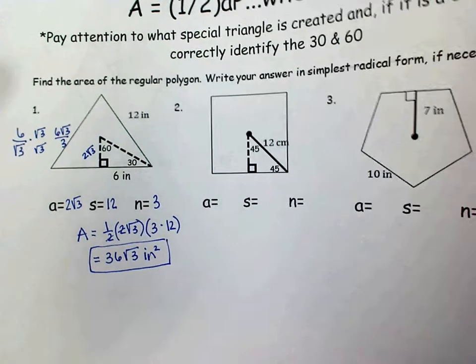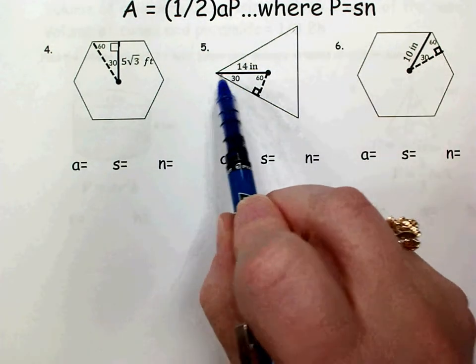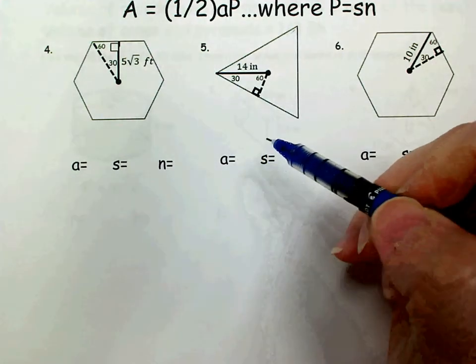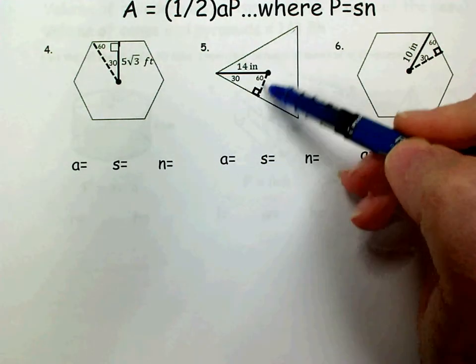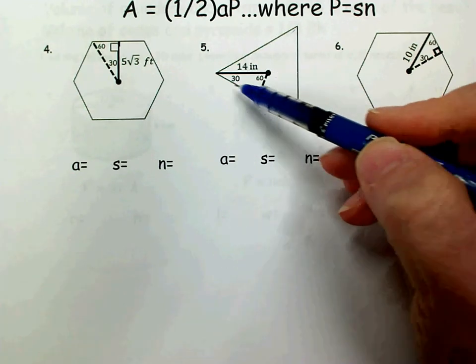On number 5, we also have an equilateral triangle, but this time we're given the radius length. So from the center to the vertex, remember that's the radius. So I sketched in an apothem from that center to the side being perpendicular and bisecting that side.